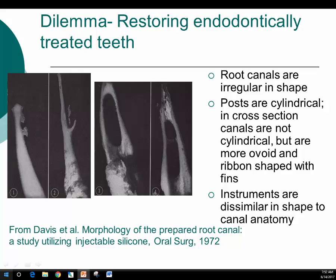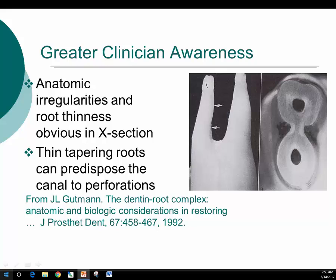We have a real dilemma when restoring the endodontically treated tooth. The root canals themselves are irregular in shape, and the posts we use are cylindrical in cross-section, but the canals aren't cylindrical. Most of the time they're ovoid or ribbon-shaped, some of them have fins. These images show impressions of root canals of anterior and posterior teeth to demonstrate those irregularities.